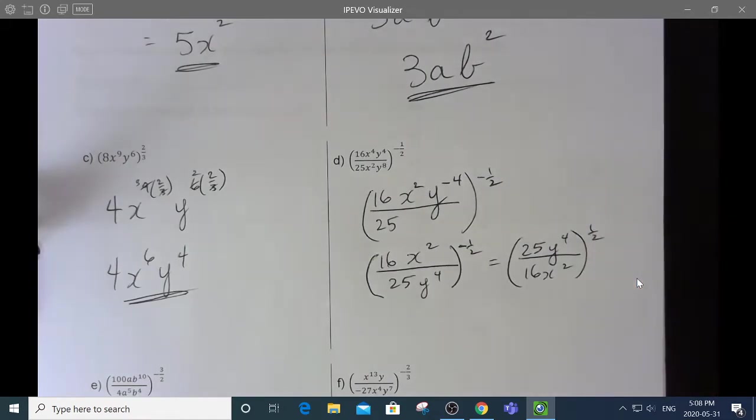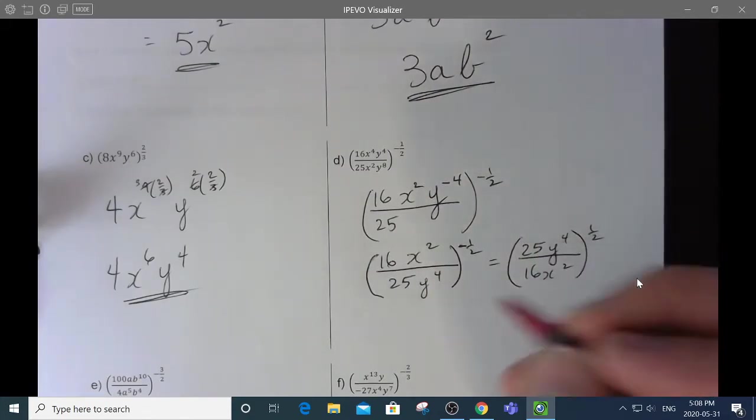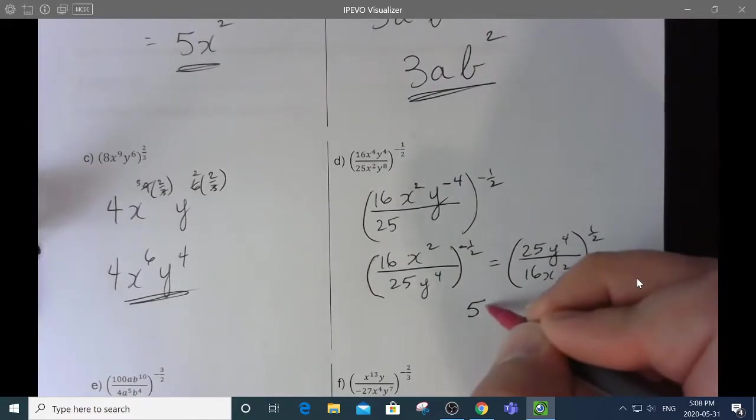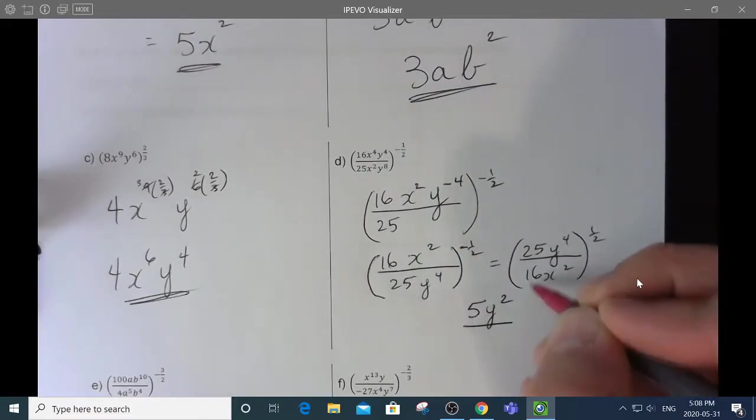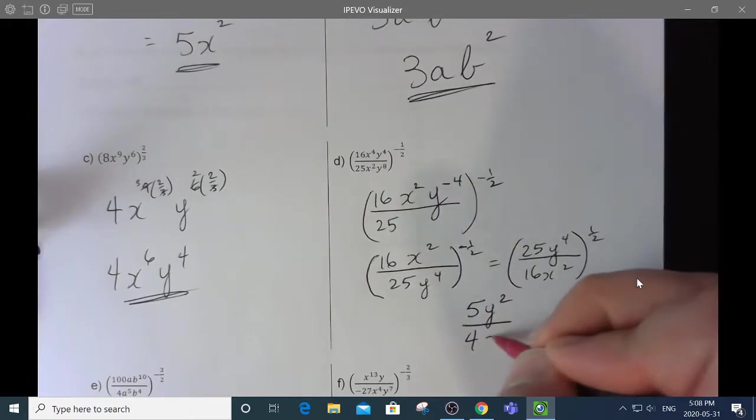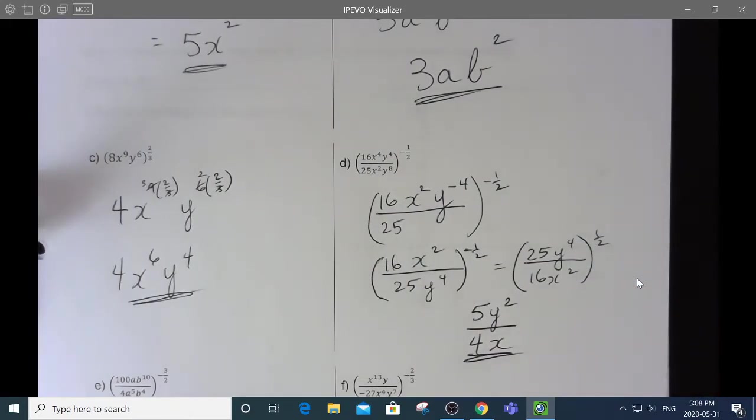Once you use that negative, it's been used. It's gone. And now I'm going to take everything in here to the power of 1 half, which means I square root everything. So, the square root of 25 is 5. The square root of y to the 4 is y squared. And the square root of 16 is 4. And the square root of x squared is x. And that is simplified.